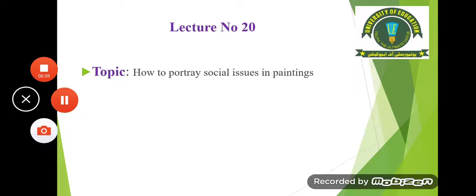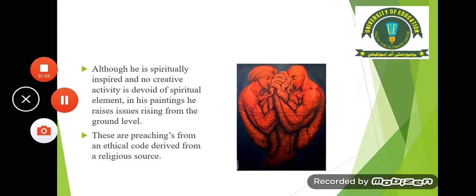Today we are going to cover lecture number 20 of this subject, and the topic is: how to portray social issues in paintings. Today we will see how different artists, especially of Pakistan, have portrayed different social issues in their paintings and how they are using their colors conceptually and different symbols to portray their concepts.